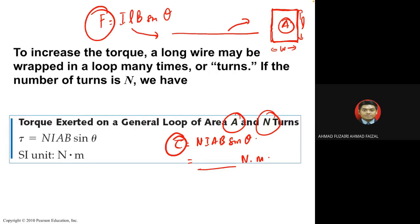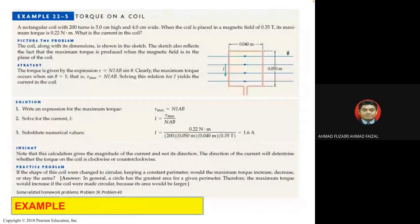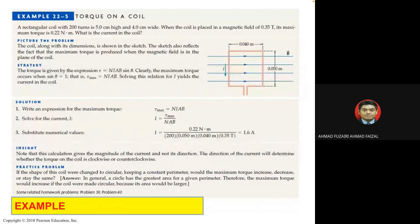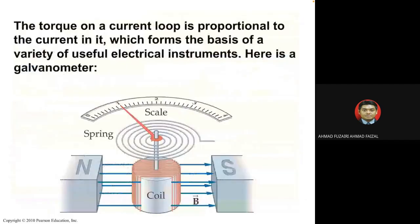In a straightforward example: a rectangular coil with 200 turns is 5 cm high and 4 cm wide — that gives the area. When placed in a magnetic field with maximum torque of 0.22 N·m, we can find the current in the coil.